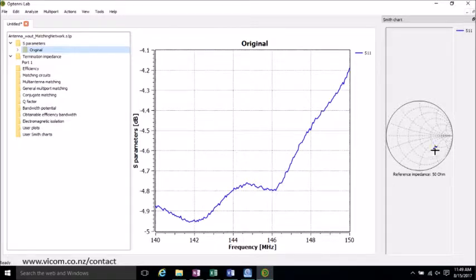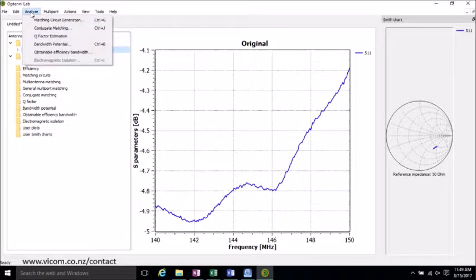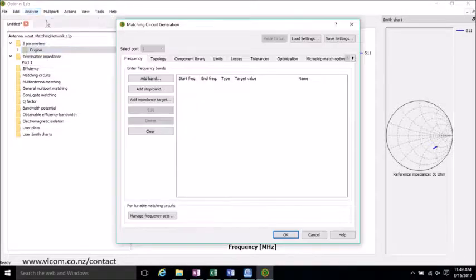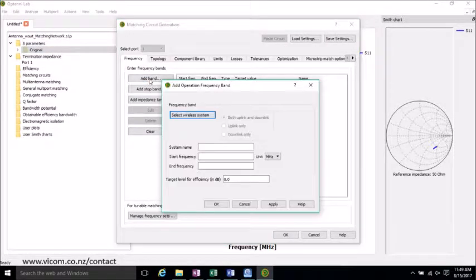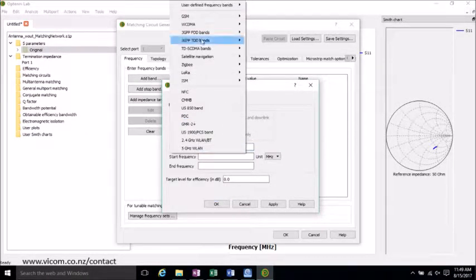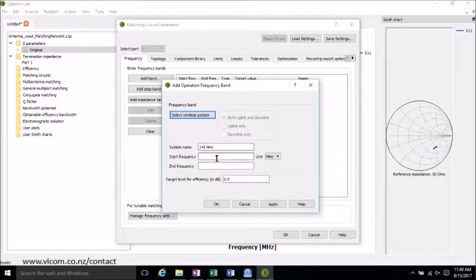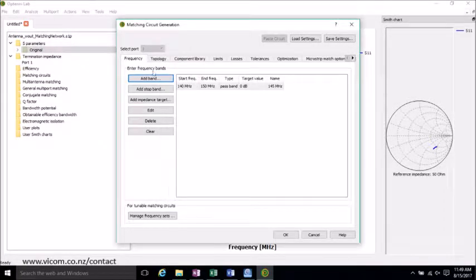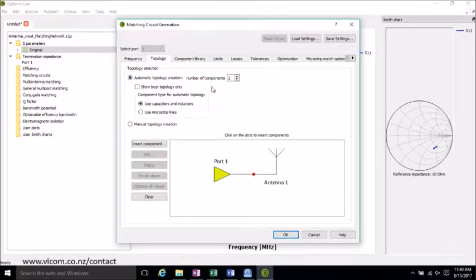And to generate a matching circuit, we go to Analyze and Matching Circuit Generation. Let's add a band. 145 MHz is our band. But you can also select the wireless system, depending on what you're using. And I'll use a 10 MHz span. Okay, and we'll check the topology.